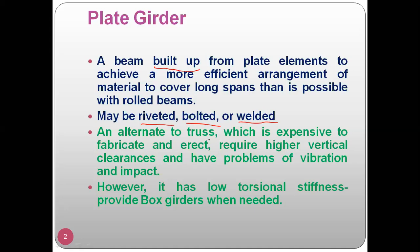An alternative to a roof truss is a built-up member. A roof truss is very expensive and its fabrication takes much time. The alternative to trusses is a plate girder, which is used where higher vertical clearances are required. For example, railway over bridges need a lot of vertical clearance in their movement.